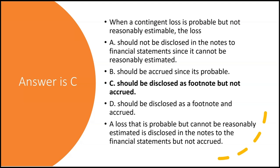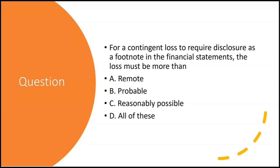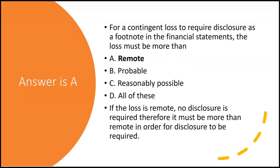For a contingent loss to require disclosure as a footnote, the loss must be — A: more than remote; B: probable; C: more than probable; D: more than reasonably possible. If it were just remote, you wouldn't have to disclose it. For footnote disclosure to be required, it must be more than remote, so A is correct. If it were probable, you'd be up to the point of potentially booking it as an accrued liability, not just disclosing it.